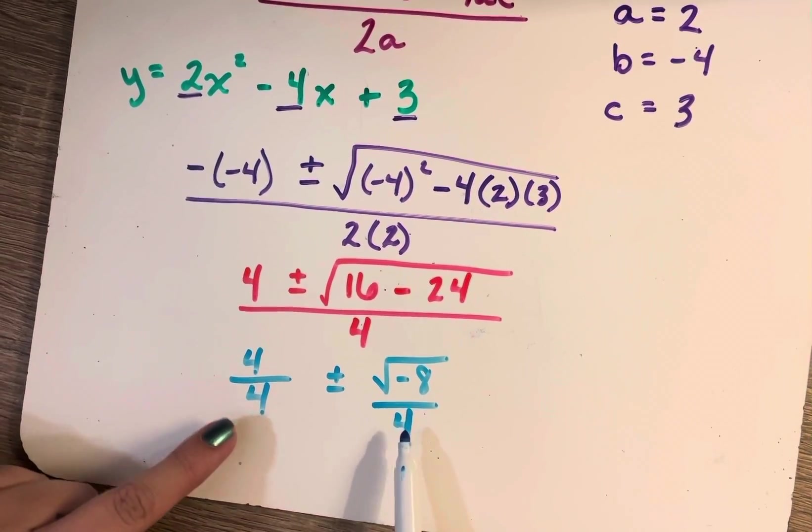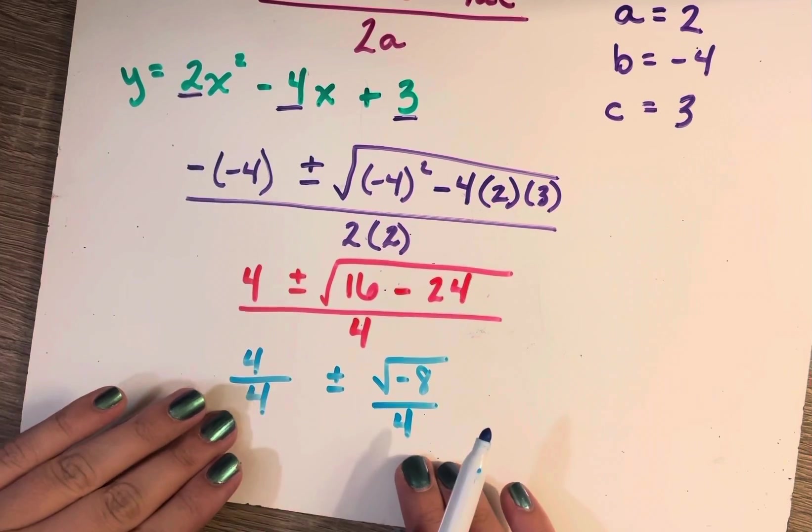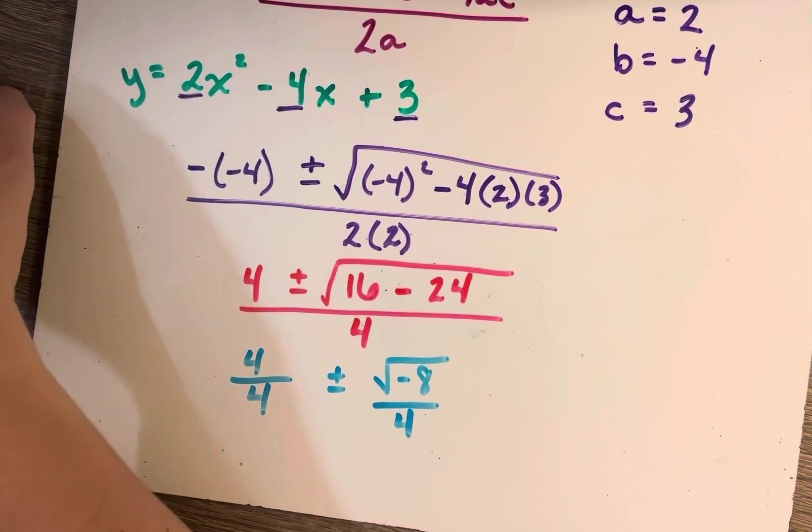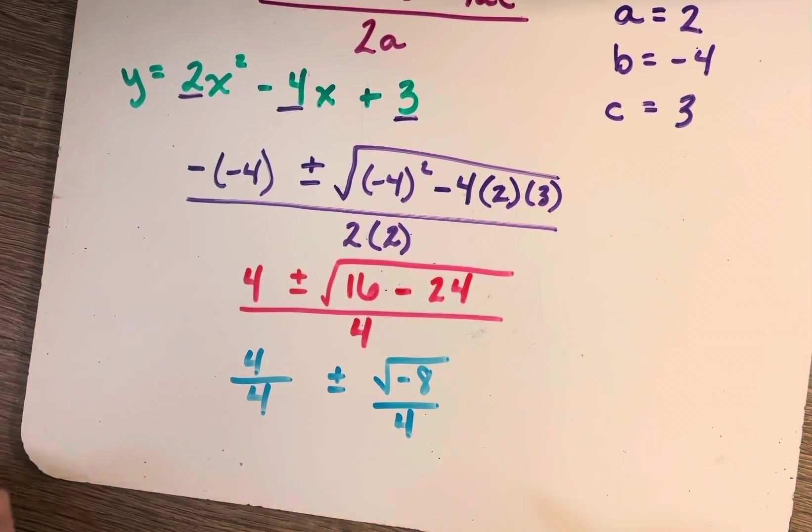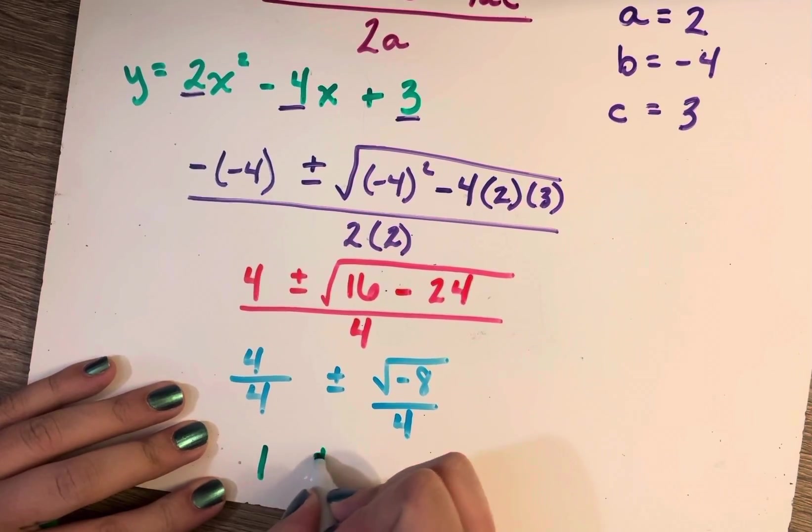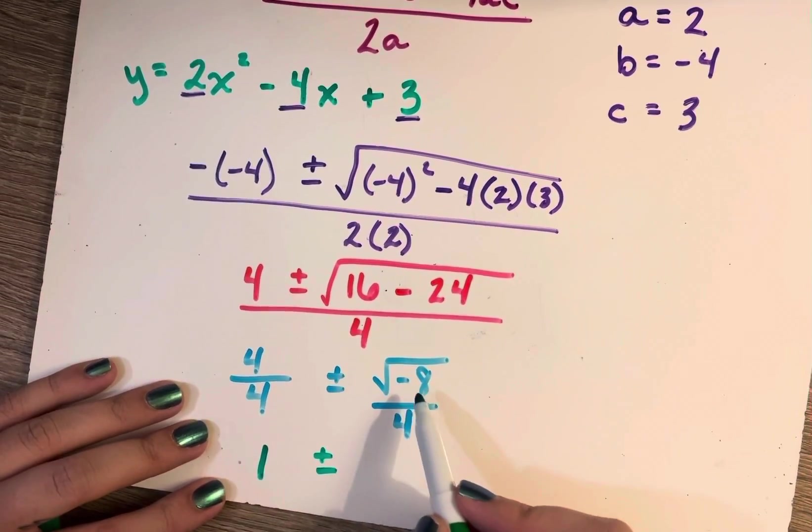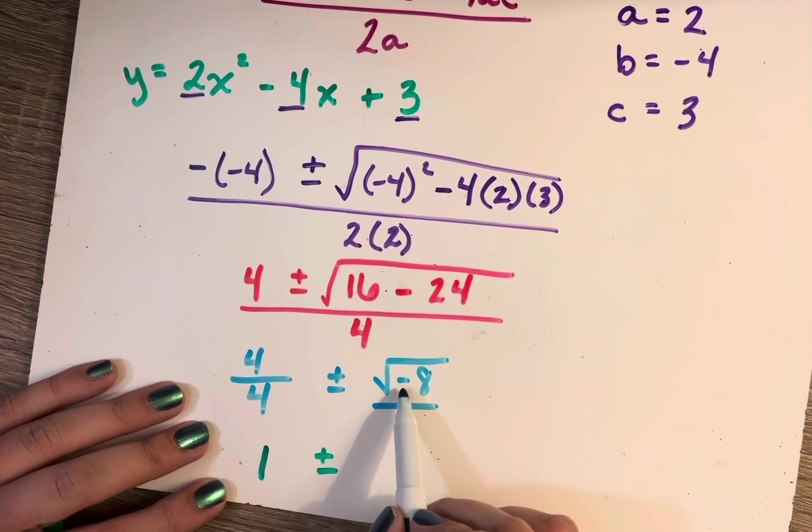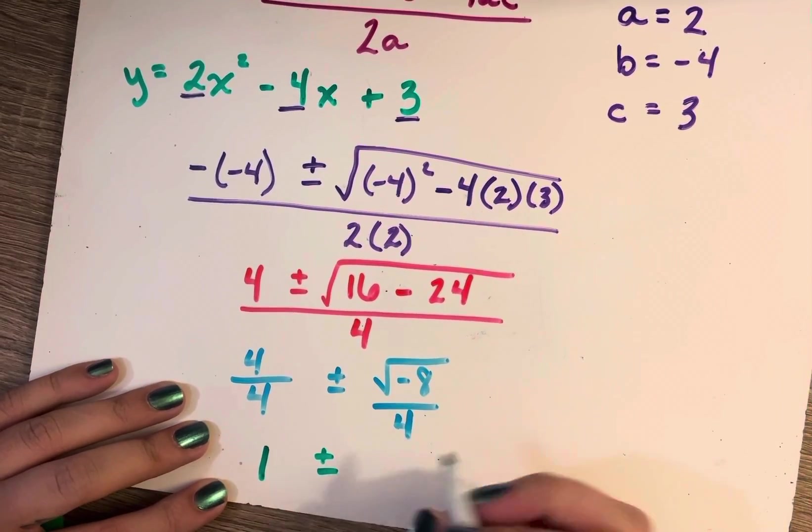Alright, so now we're going to simplify each of these separate terms, these fractions, a little bit more. So 4 over 4, we know that that simplifies to just 1. Square root of negative 8. So I can take out a couple of things here. First of all, since there's a negative, I can take out an i.